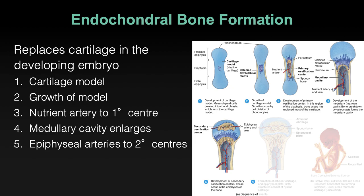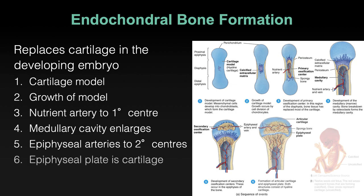Bone tissue spreads and grows outwards as the epiphyseal arteries send branches to the bookends — the top of the long bone. So you have two main ossification centers where bone is proliferating and growing: one in the diaphysis and one in each epiphysis, and they're converging. There's bone in each of those centers, with cartilage still between the two.